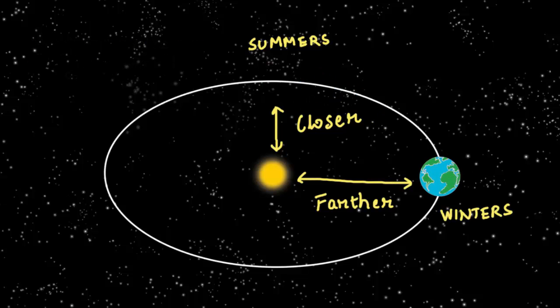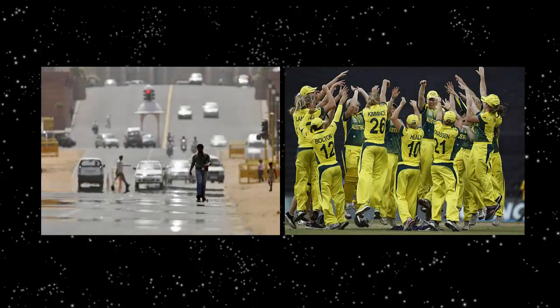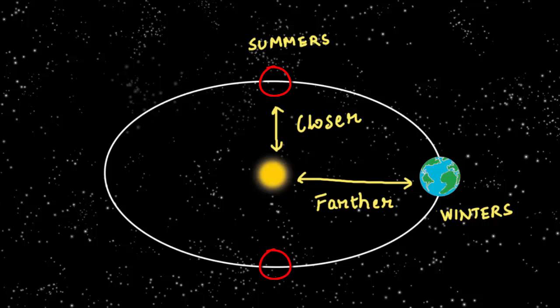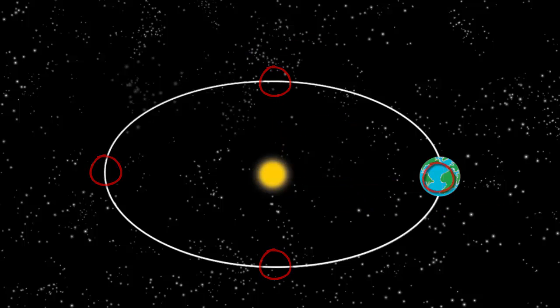Now even if we consider the path to be an ellipse, the whole of Earth should have same seasons. Instead, when people are sweltering here in peak summer in India, Australians are enjoying cricket in winters. It would also mean that we will have two summers and two winters, which is not the case.